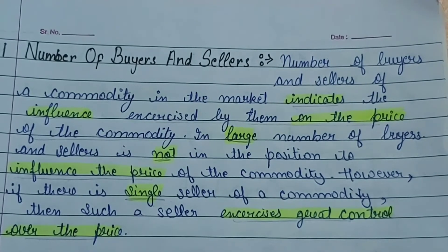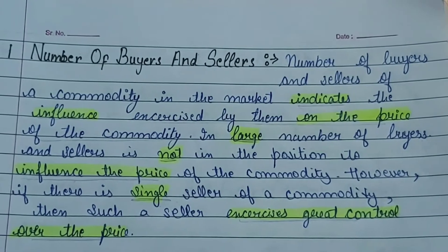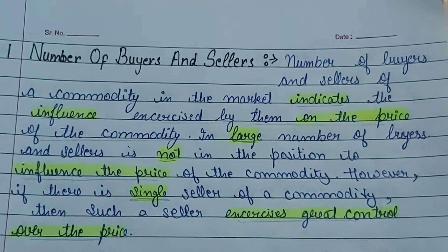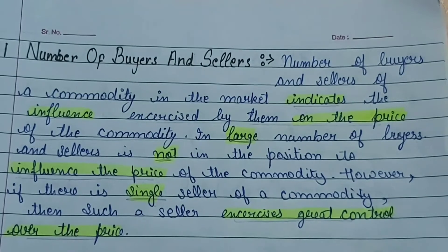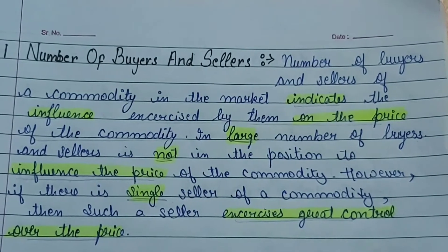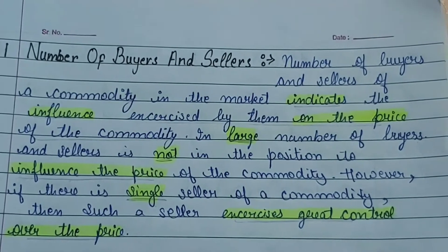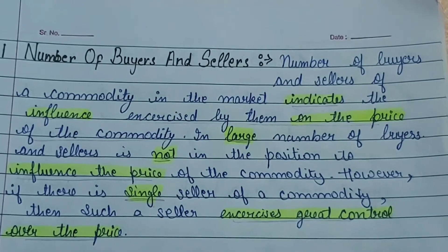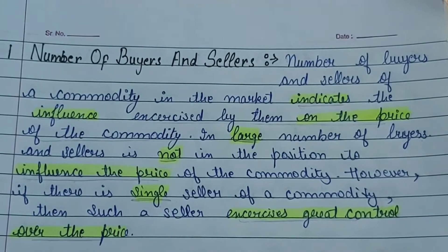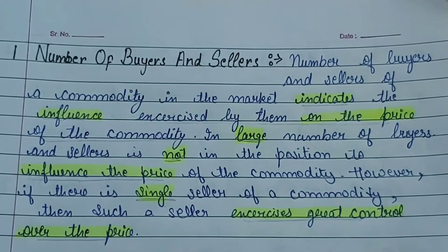For example, अगर large number of buyers and sellers हैं एक market में तो वो price को influence नहीं कर सकते — they are price takers. Whereas अगर एक single seller है commodity का एक market में तो वो price पर काफी control कर सकता है, so वो price maker होता है। उसे पता है कि market में कोई competition नहीं है और वो single seller है, इसलिए लोग कितना भी price हो purchase करेंगे।